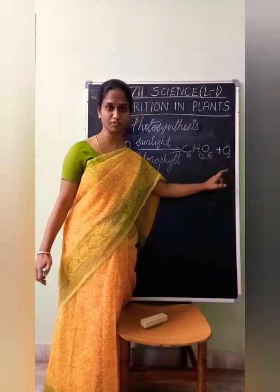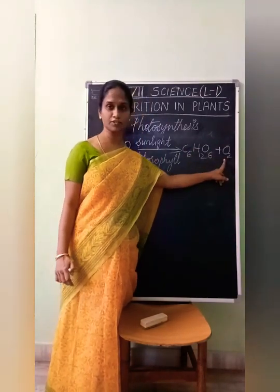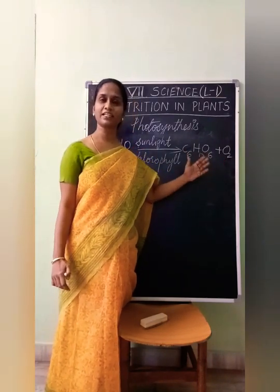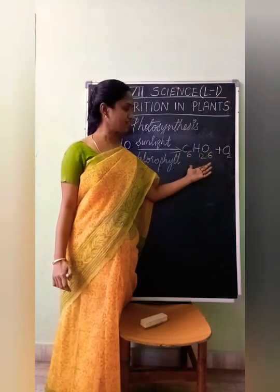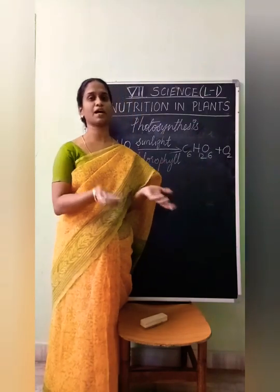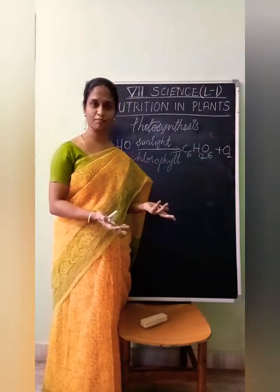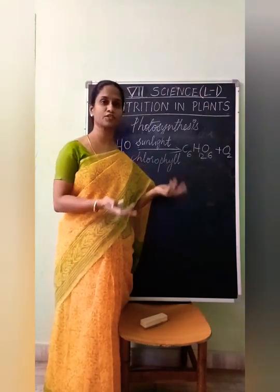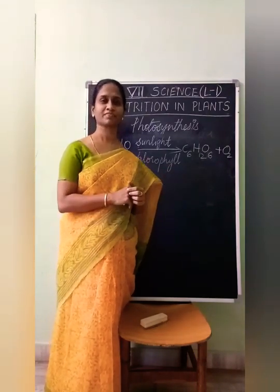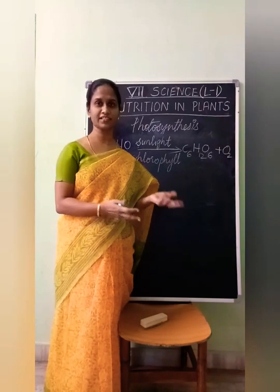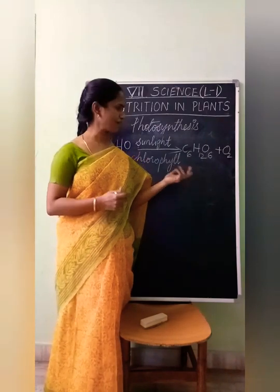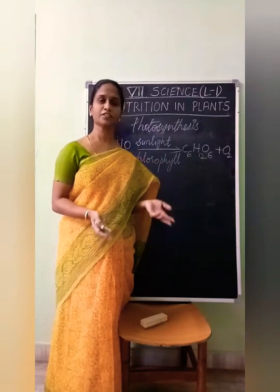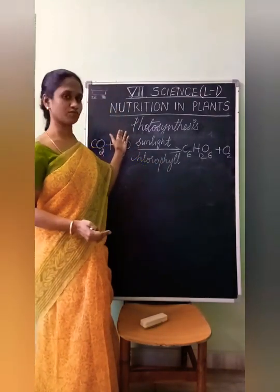This food is stored in various parts of the plant. For example, a carrot stores food in its root, sugarcane stores food in its stem, and cabbage stores food in its leaves. Various plants store food in various parts. That is all about photosynthesis.